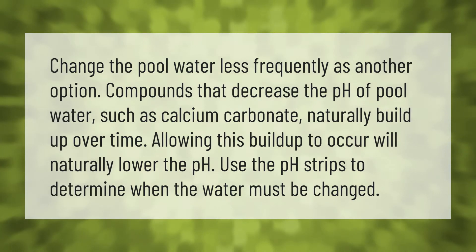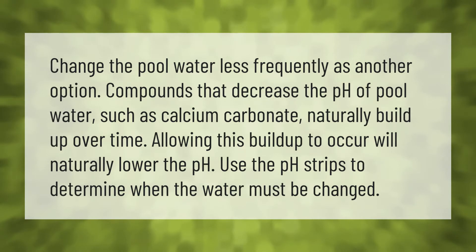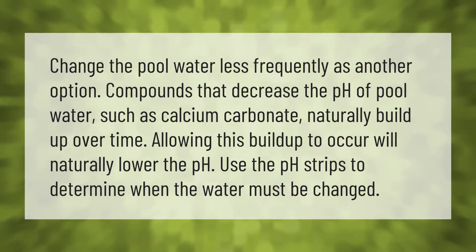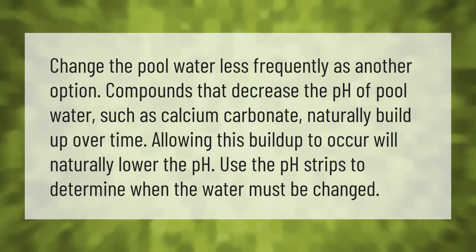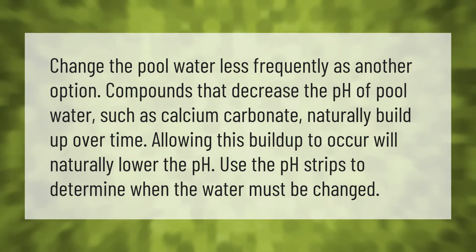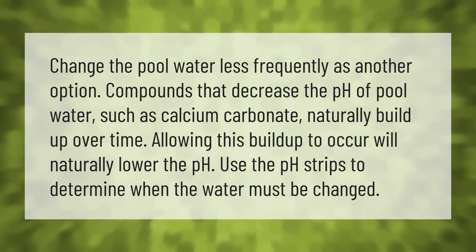Change the pool water less frequently as another option. Compounds that decrease the pH of pool water, such as calcium carbonate, naturally build up over time. Allowing this buildup to occur will naturally lower the pH. Use the pH strips to determine when the water must be changed.